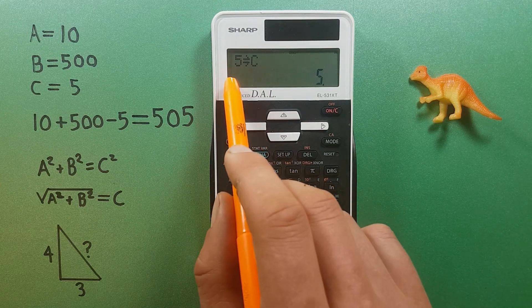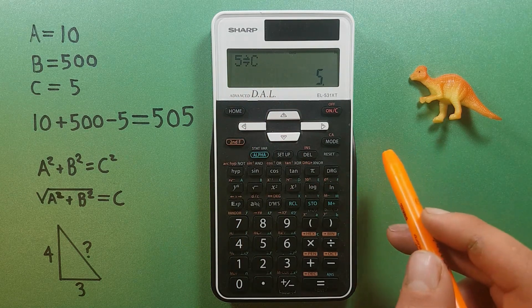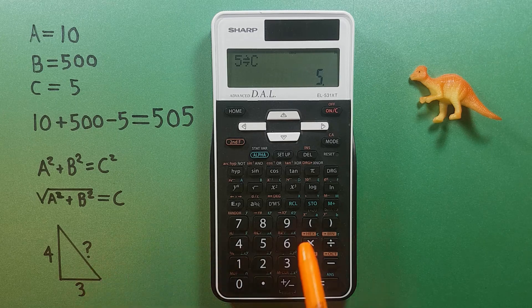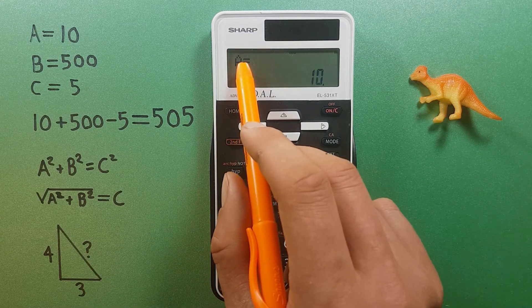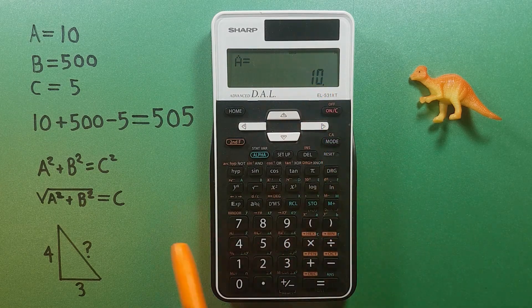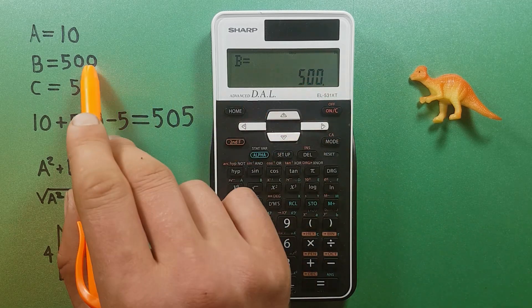And 5 store into C. Now these three numbers should have been stored. If we want to make sure they're stored, we can recall them. So if we recall A, we see A equals 10, which is correct.